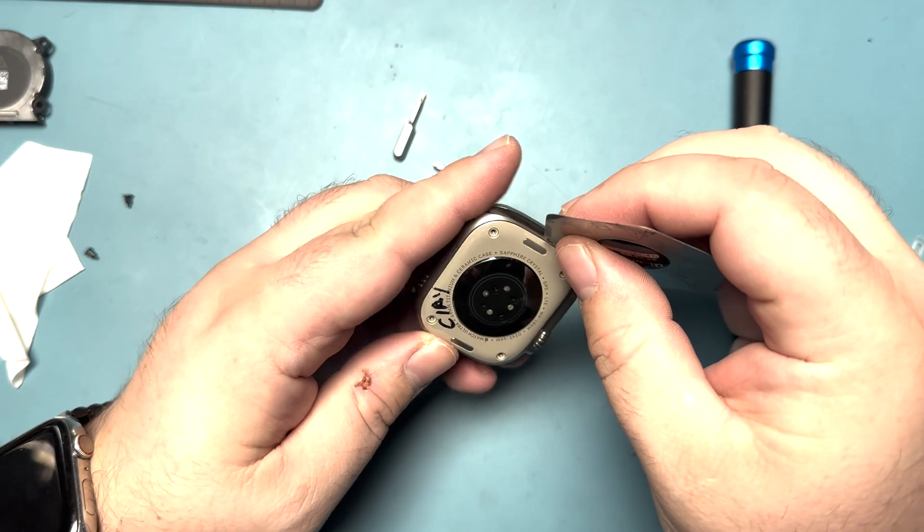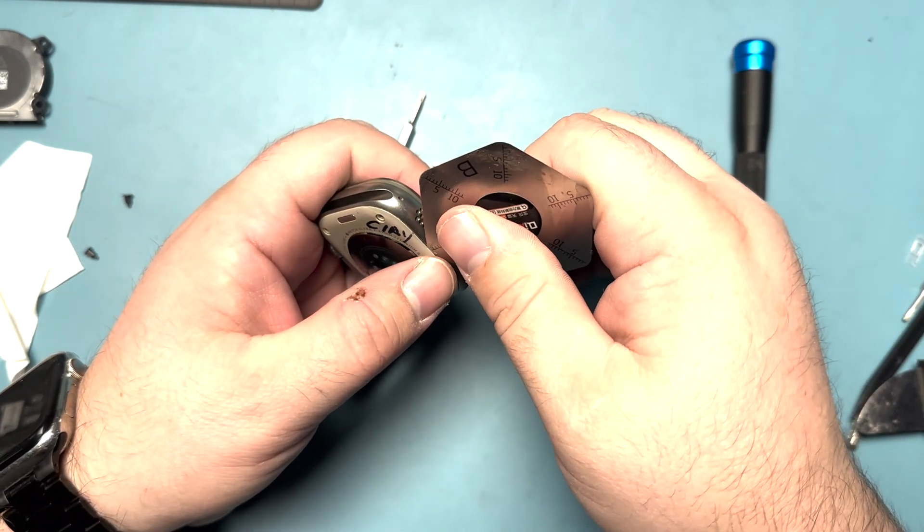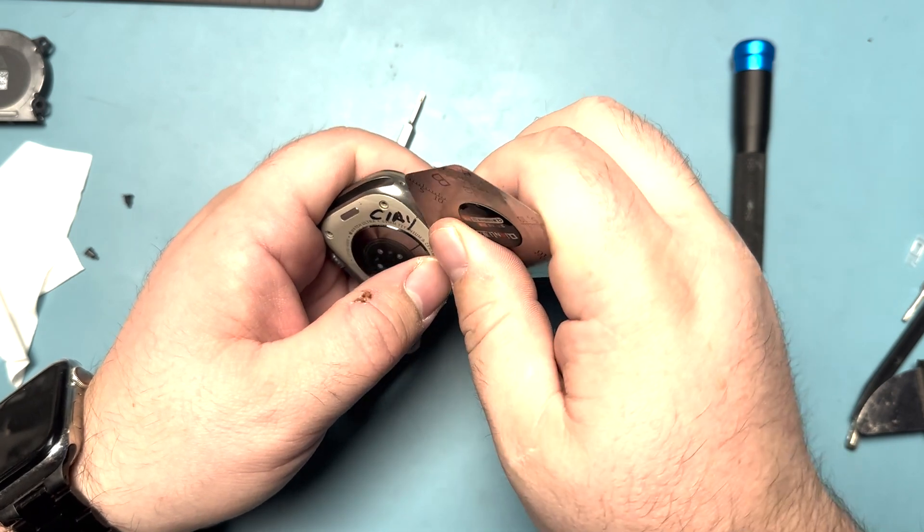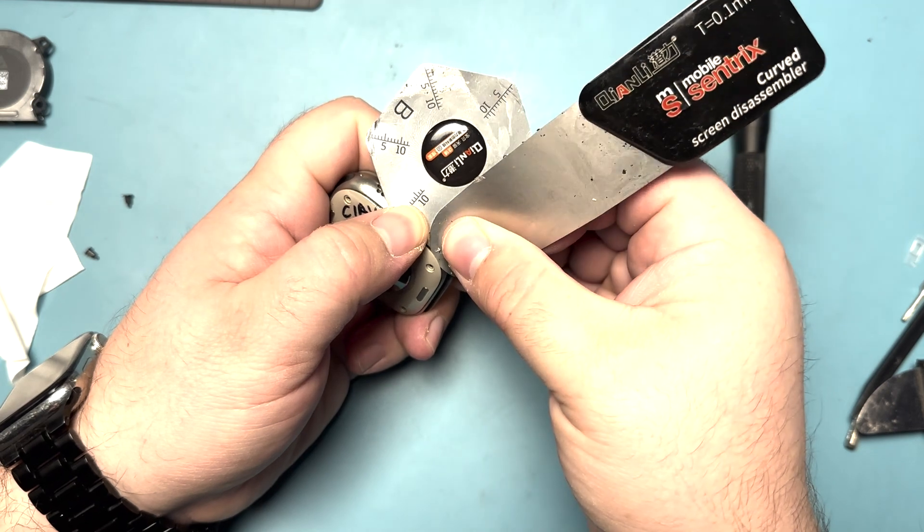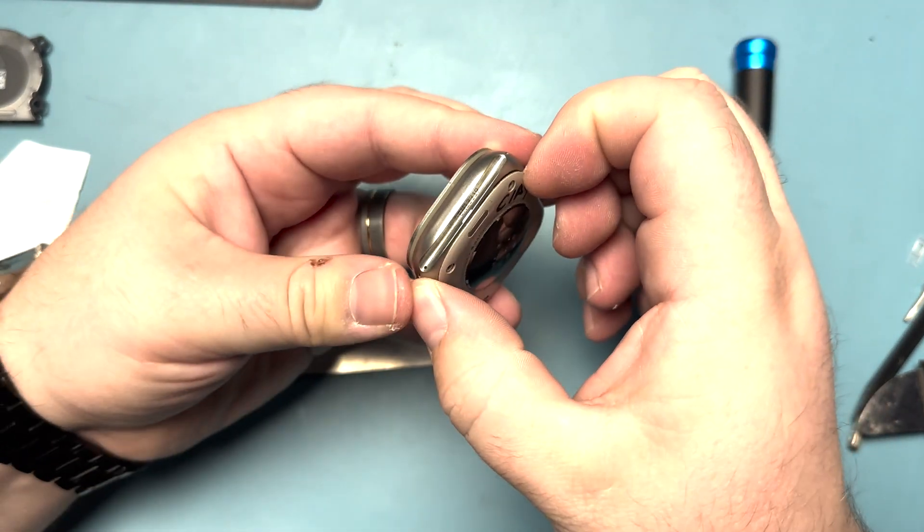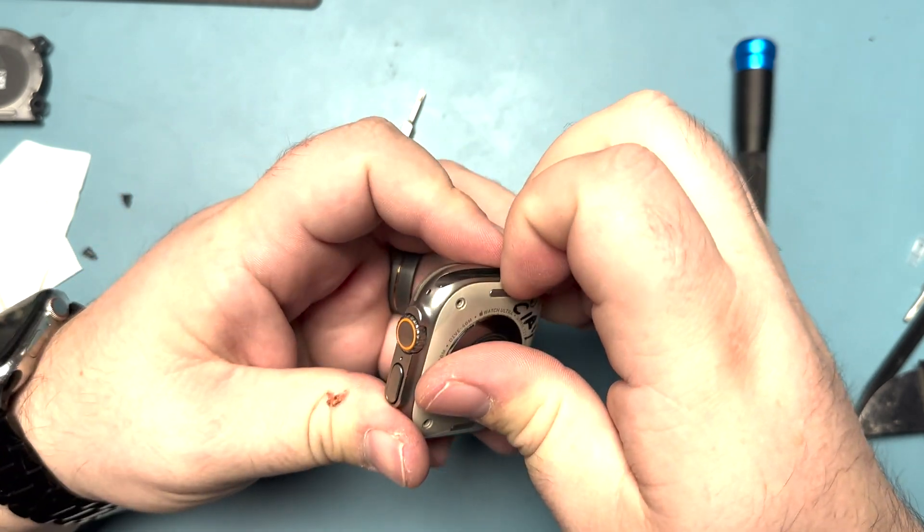We'll take our little pry tool, push it in, give it some leverage, and see if we can pop this back off. We'll grab another tool and give it some tension. I'll run my fingernail around it and break up that seal that it has.